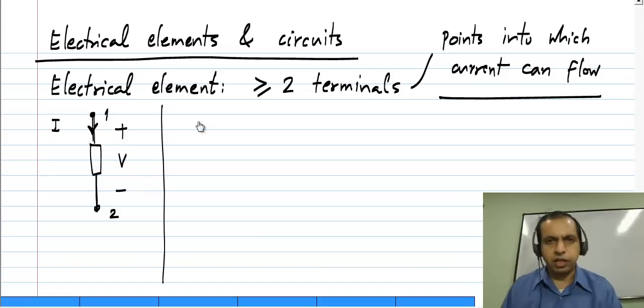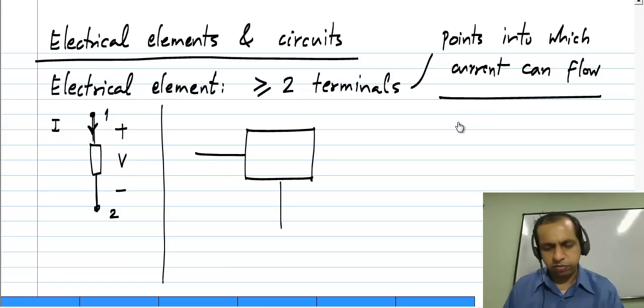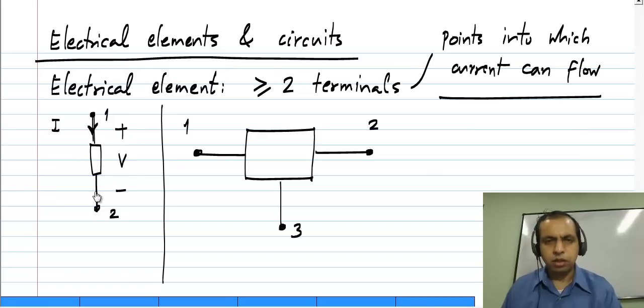Now, of course, we can have electrical elements with more than two terminals. We can have an element like this which has three terminals. We can have currents going into all three of them, and we can also measure the voltages between any two of those terminals.